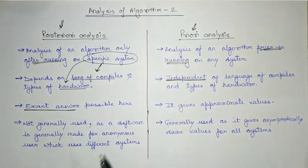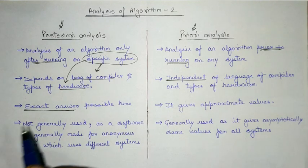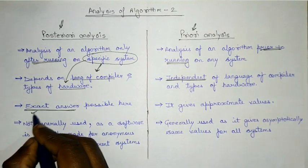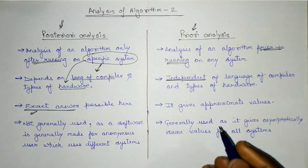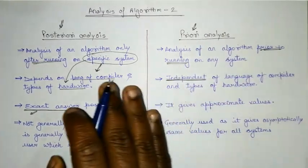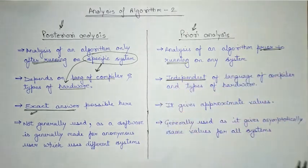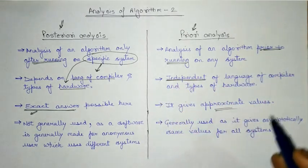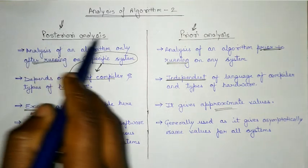In posterior analysis, we are able to get exact values because we are running the algorithm on a specific system, which makes it possible to get exact values. Prior analysis, on the other hand, has not been done on any system — it is just an assumption — so it gives an approximate value.